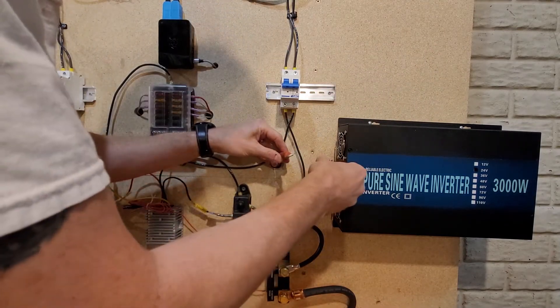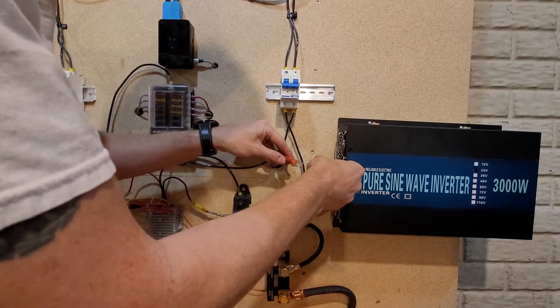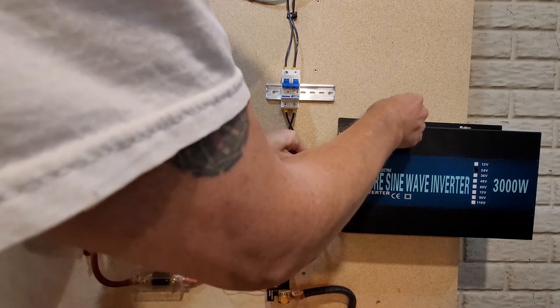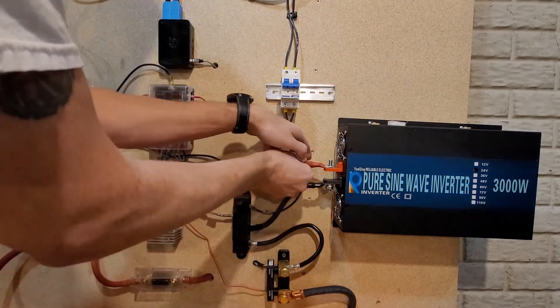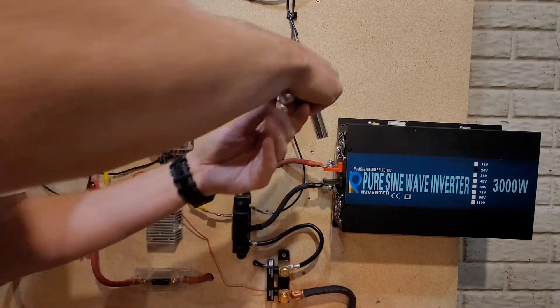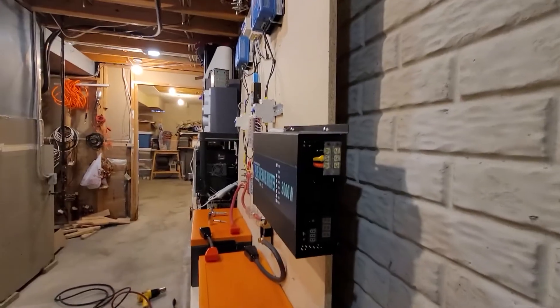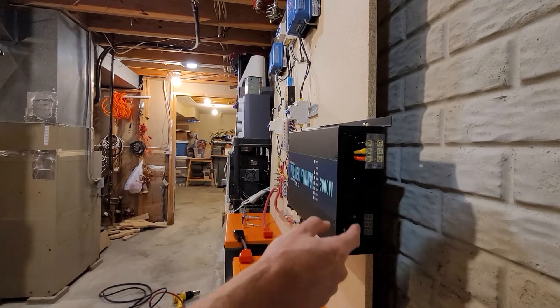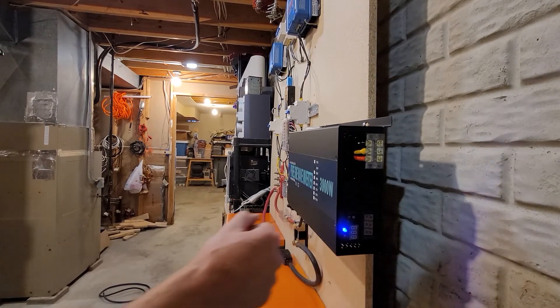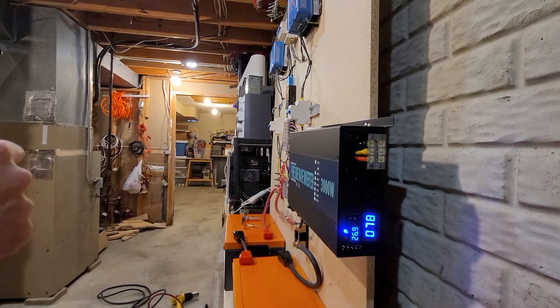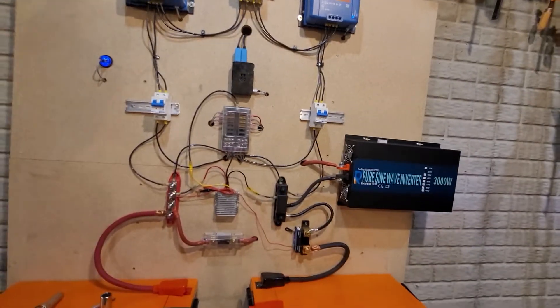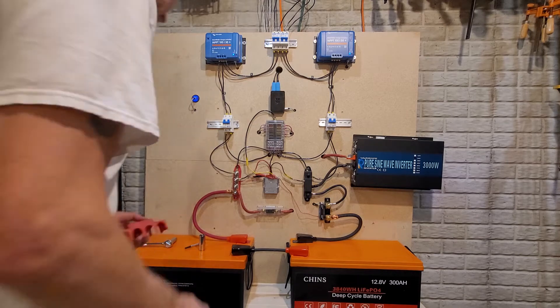Take our resistor. Boom, just like that. Tighten it down. Let's see if this thing powers on. Beautiful, look at that. Turned on, absolutely no spark. Cover up the positive bus bar.